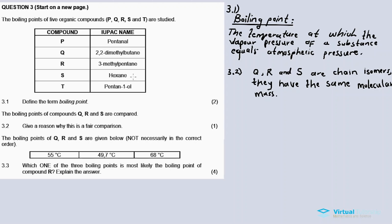Now the boiling points of Q, R, and S are given below, not necessarily in the correct order. What's fascinating is that the compounds have the same molecular formula, same molecular mass, but the boiling points are different. Basically the same chemical formula but the boiling points are different.